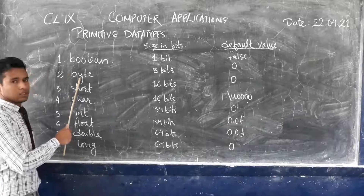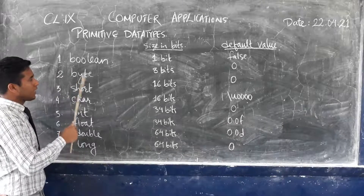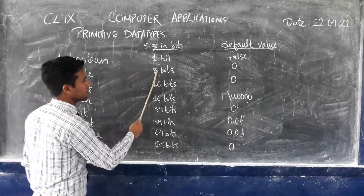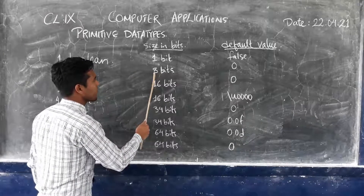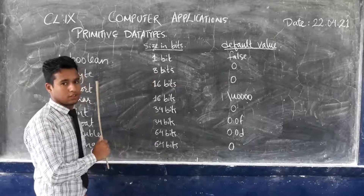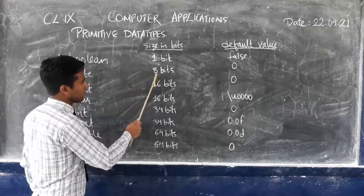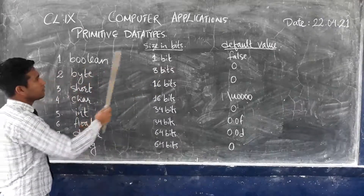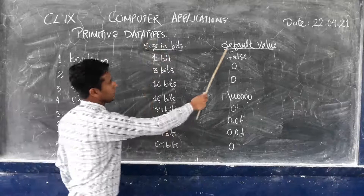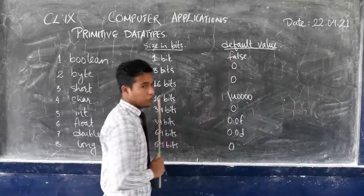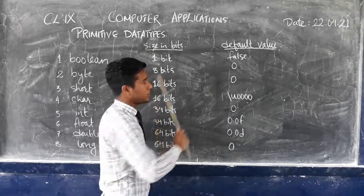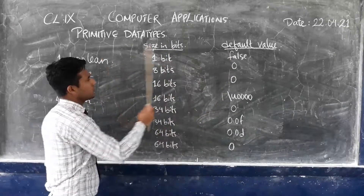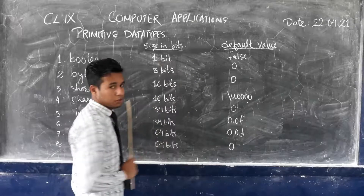The second one is byte. The size of byte in bits is 8 bits and the default value is 0.